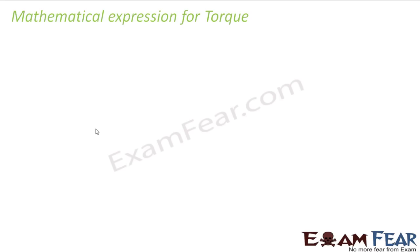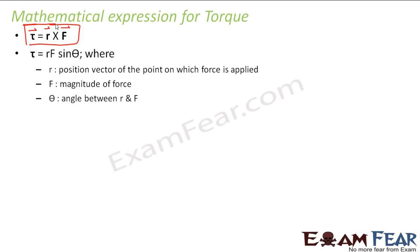So now let us look at a mathematical expression for torque. Torque is defined as the cross product of the radius vector and the force. So how do we define it? A cross B is equal to AB sine theta. Similarly, R cross F is RF sine theta, where R is the position vector of the point on which the force is applied, F is the magnitude of the force, and theta is the angle between R and F.